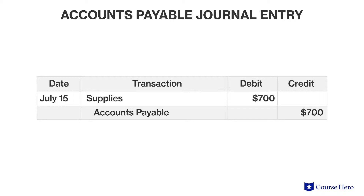The journal entry to set up the current liability would be a credit to accounts payable and a debit to supplies.